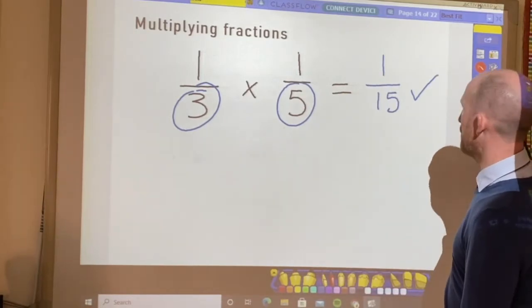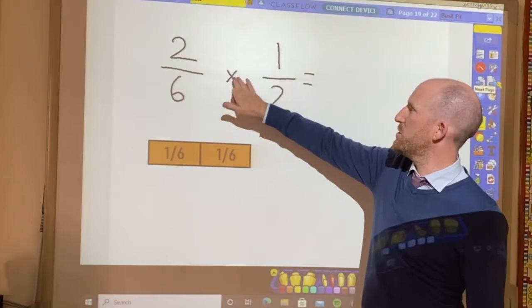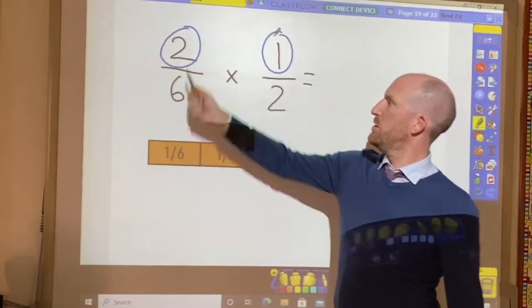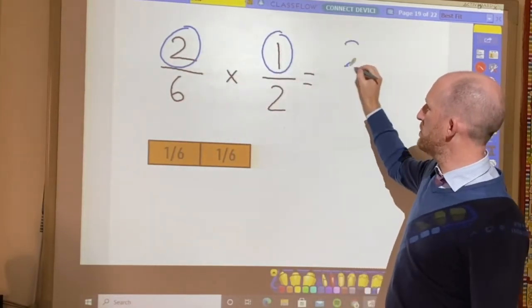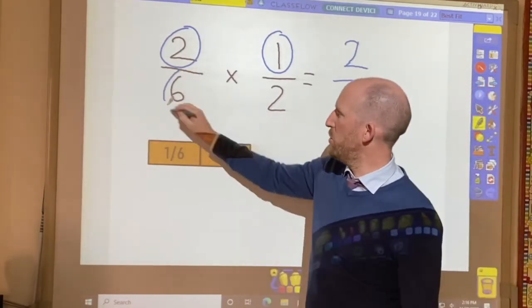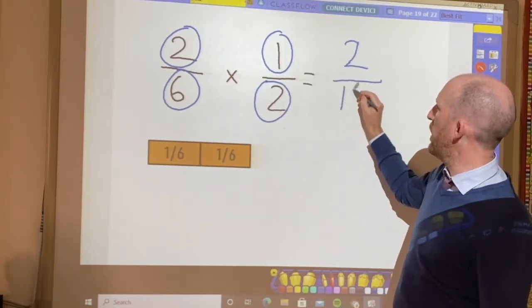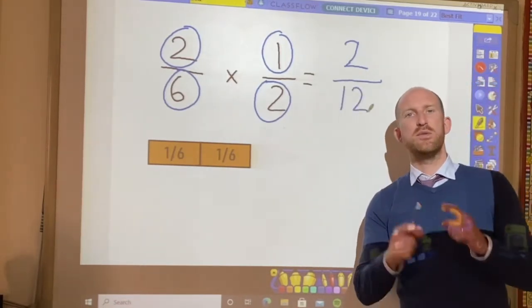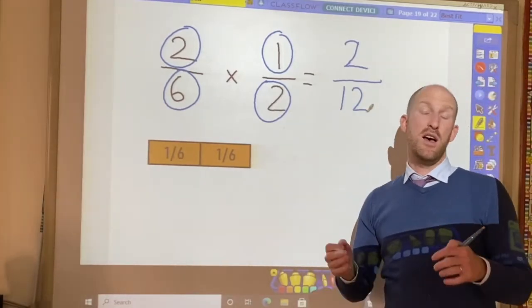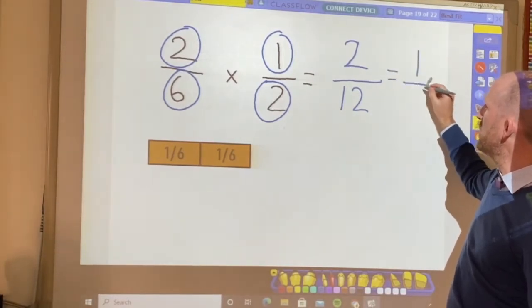Let's do another example now. So here I have two sixths multiplied by one half. So numerator, numerator, two multiplied by one is two. And then multiply the denominators together. So six multiplied by two is twelve. And this is where you need to be careful because two twelfths is actually not the final answer. This answer can actually be simplified into one sixth.